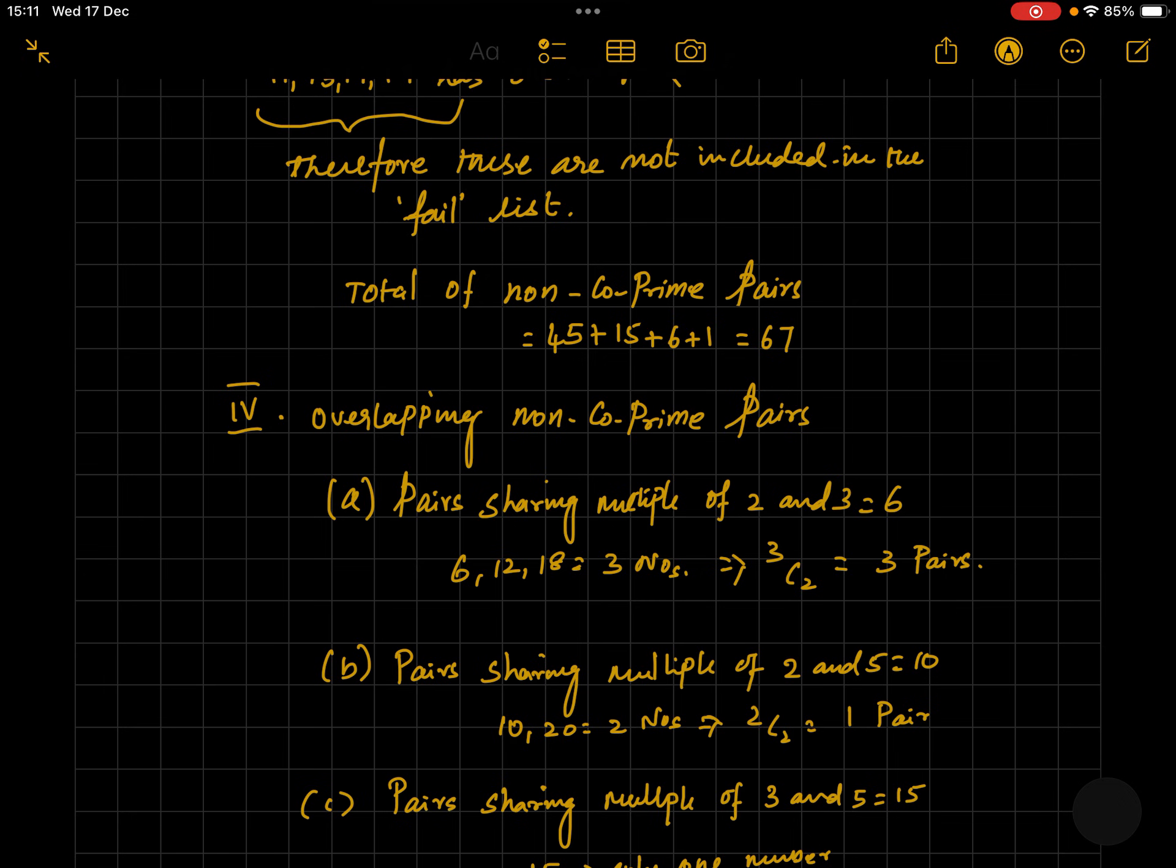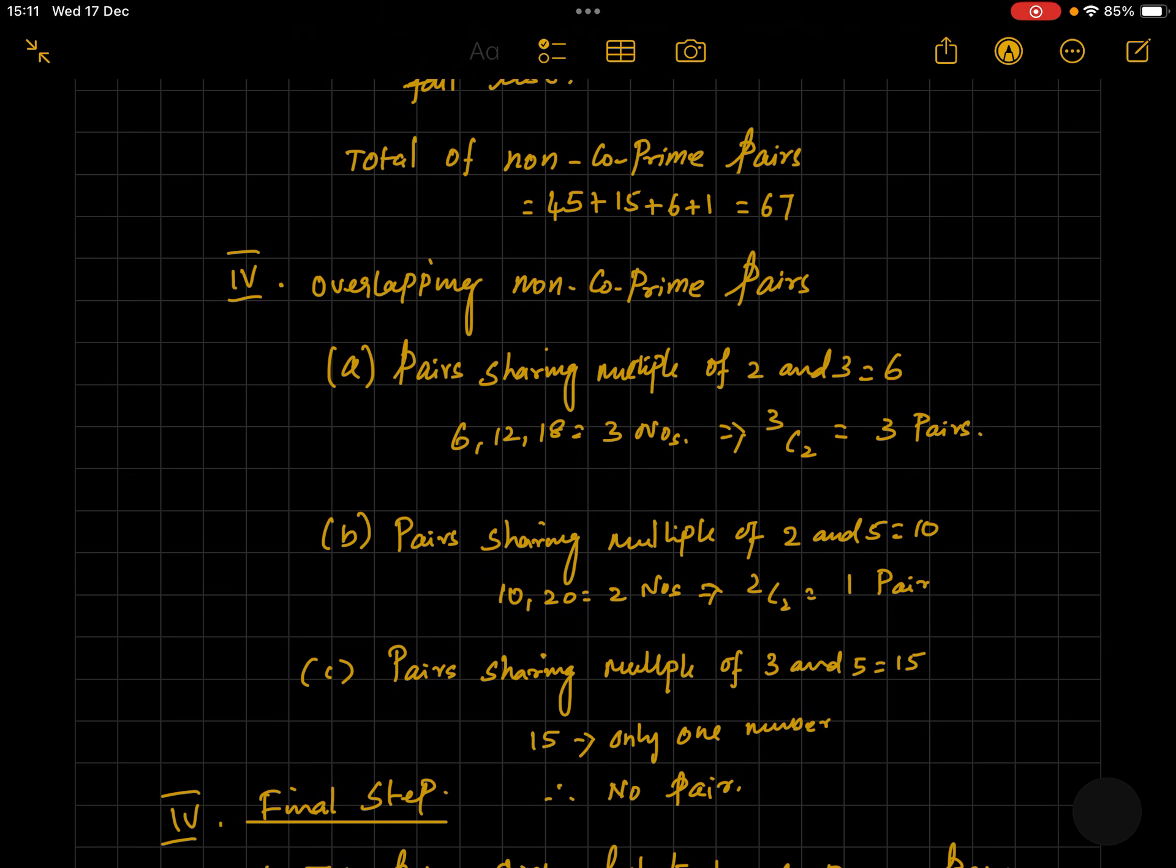Similarly, pairs sharing multiples of 2 and 5, that is equal to 10. So we have 2 multiples: 10 and 20. Therefore, 2C2 equals 1 pair can be made. So there are 4 overlapping pairs.